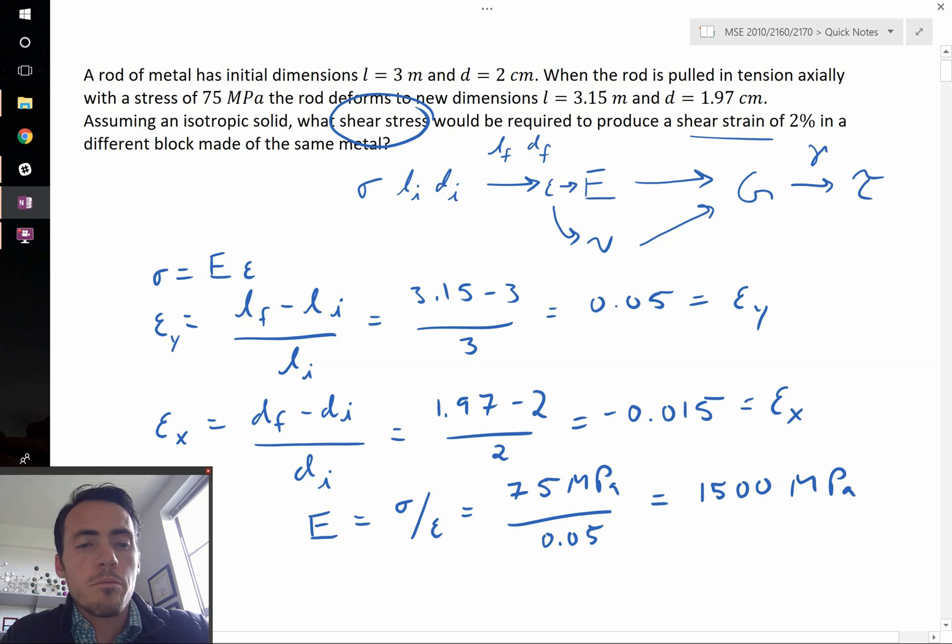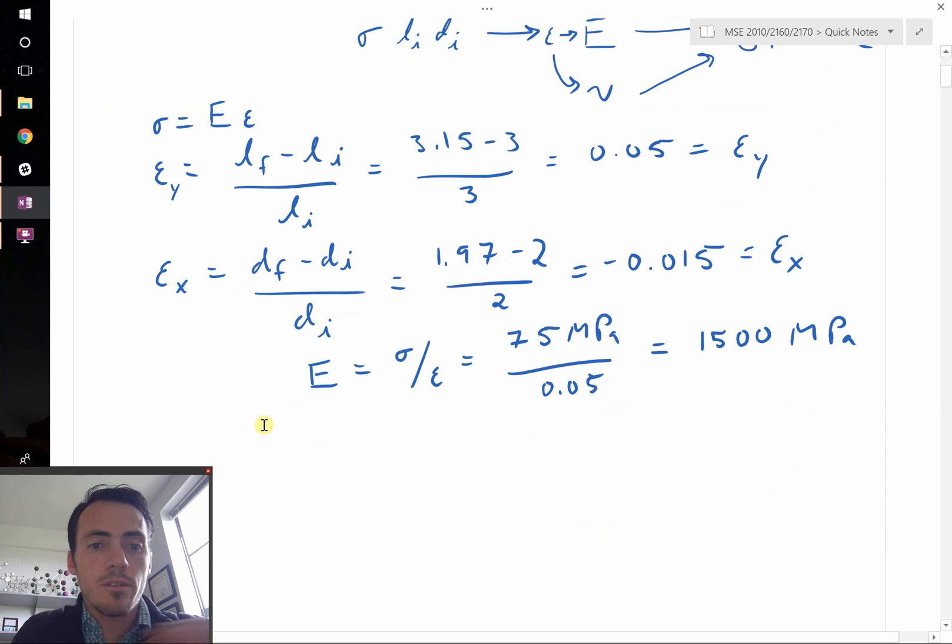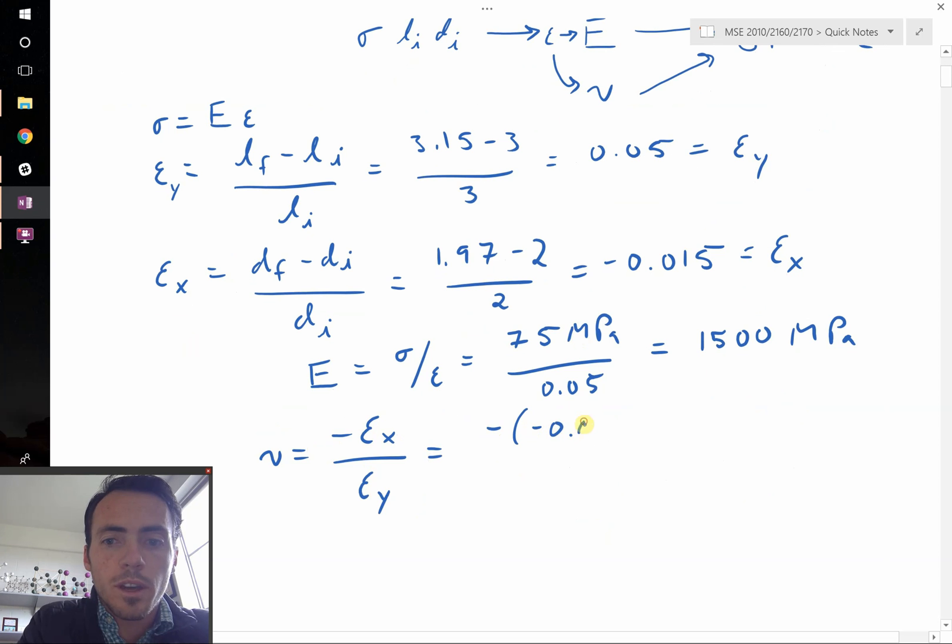So now that we have modulus, we're almost able to get the shear modulus, but we need to get the Poisson's ratio first. Poisson's ratio is defined as the negative transverse strain divided by the longitudinal strain. We've already calculated those. That's negative of negative 0.015 divided by positive 0.05. That means that our Poisson's ratio comes out to 0.3 in this case.